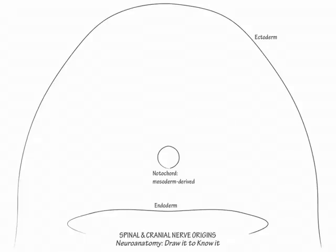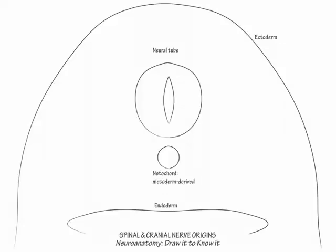The notochord induces the overlying ectoderm to develop into the neural plate. Its neural folds then invaginate to become the oval-shaped neural tube, which has a long, narrow cerebrospinal fluid space in its center, and as mentioned, is ectoderm-derived. We will draw the details of the neural tube later.